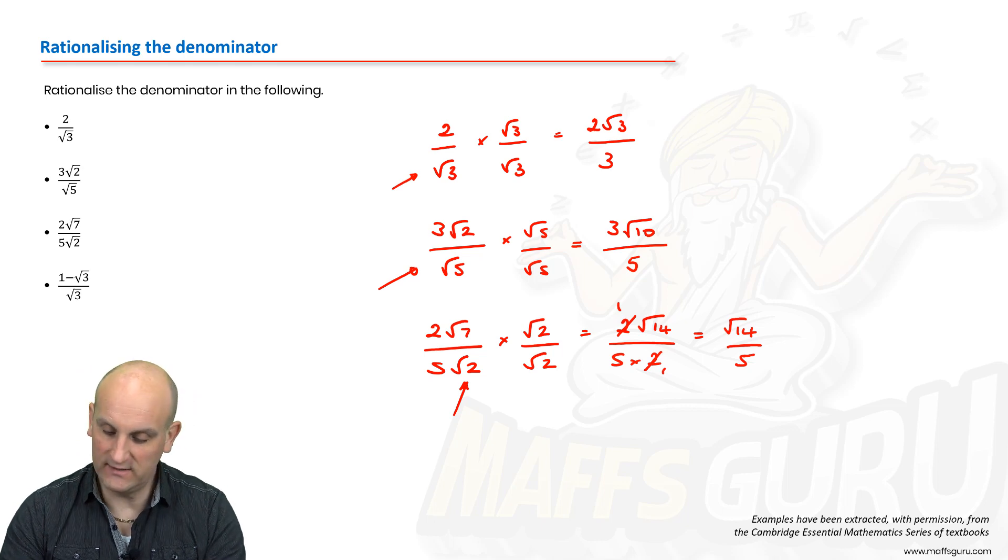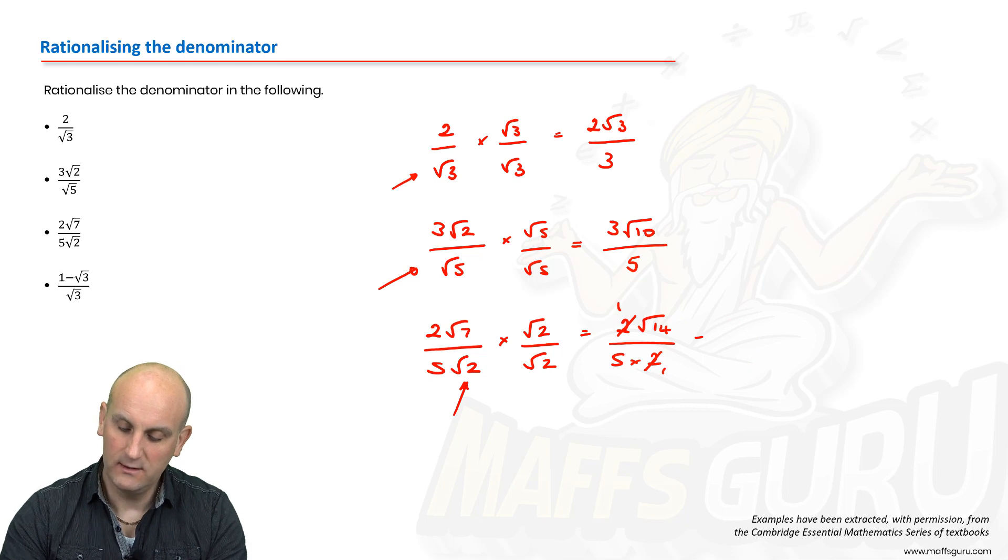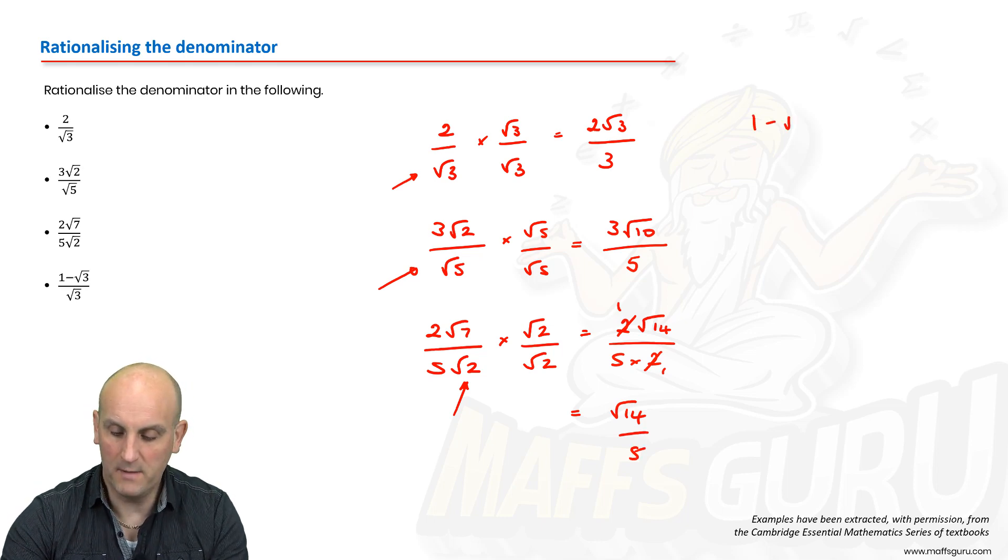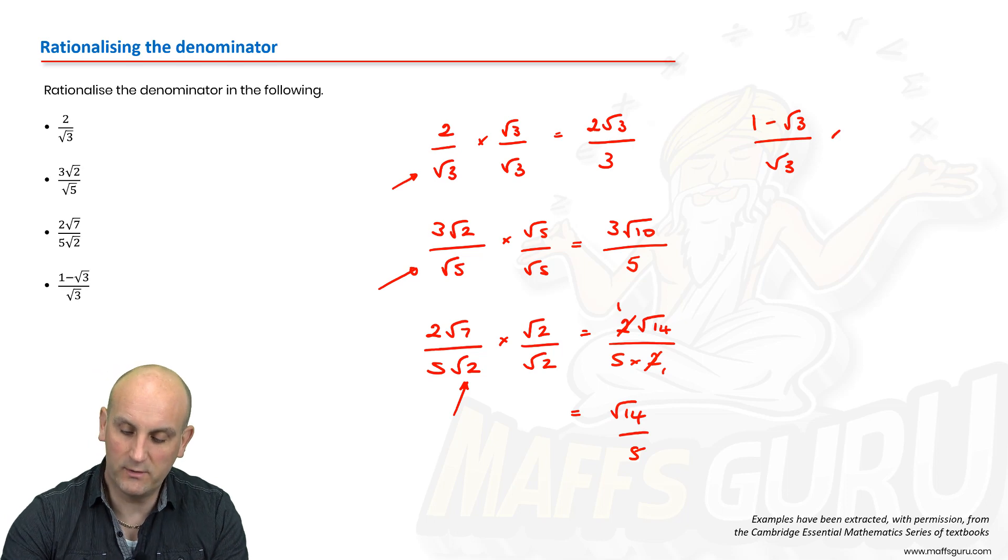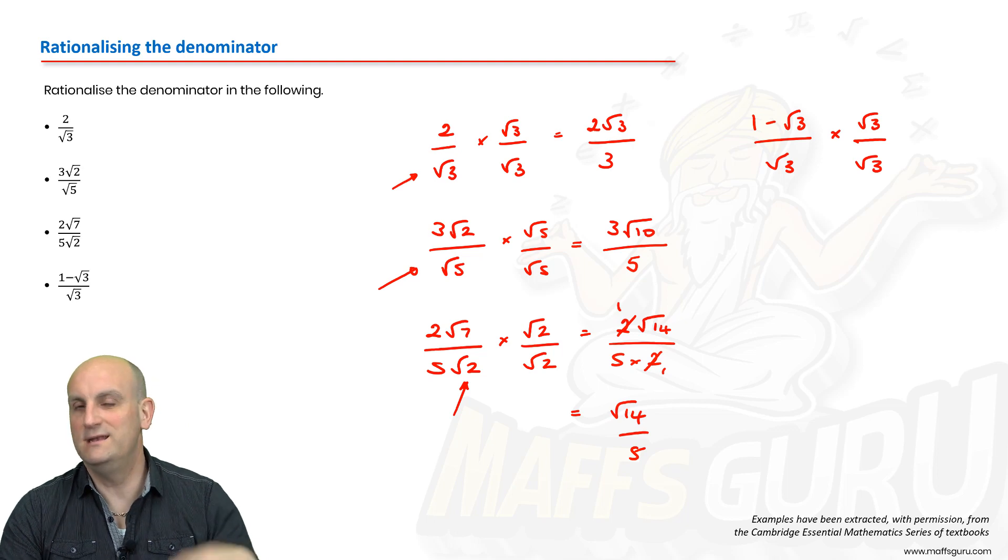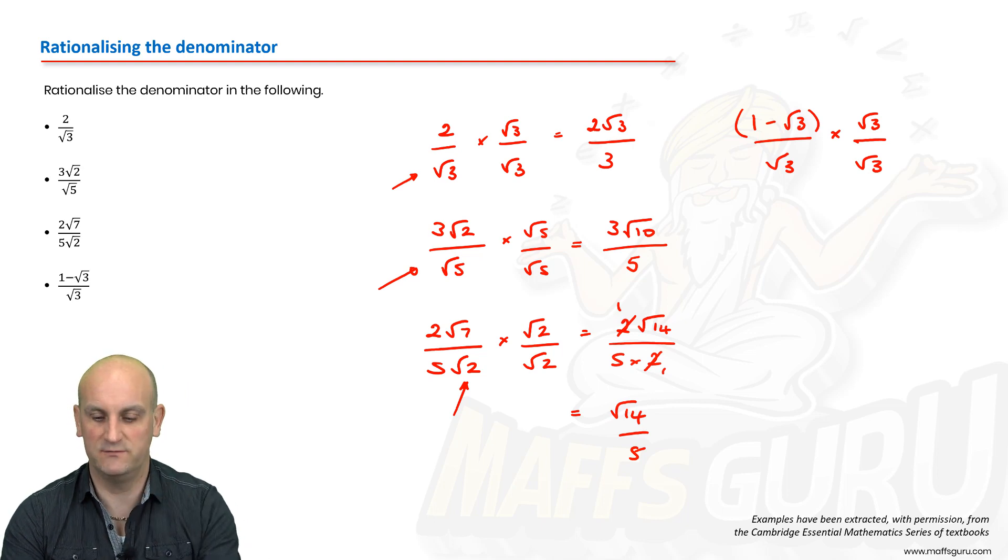Last one. Now this is where life gets a bit trickier. We're going to deal with 1 minus root 3 on root 3. I'm just going to multiply here by root 3 on root 3 because that's what's on the bottom. But I need to be careful because I actually have two terms on the top of this fraction. So what I'm going to do is I'm actually going to put those in brackets, which now reintroduces my distributive law.